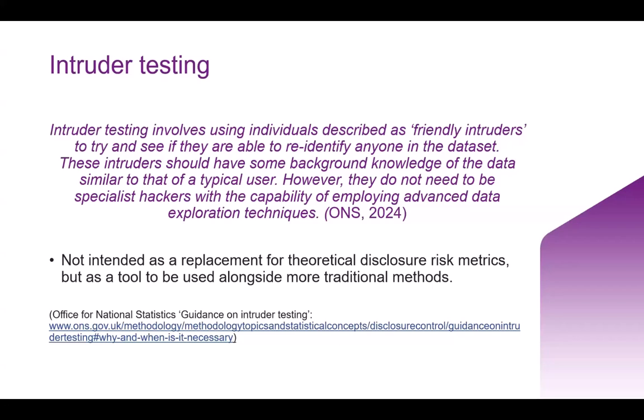When we're accepting a data collection into our repository, we do a quality assurance check on the data to make sure it's unlikely for participants to be identified. We don't call it an intruder test — we call it our QA, our quality assurance check. Any data that we receive, we have a sizable sample which we check first and foremost. We do sometimes have a go at seeing if we can re-identify anyone, asking colleagues to do some Googling and see what they can find, checking if we can piece information together.